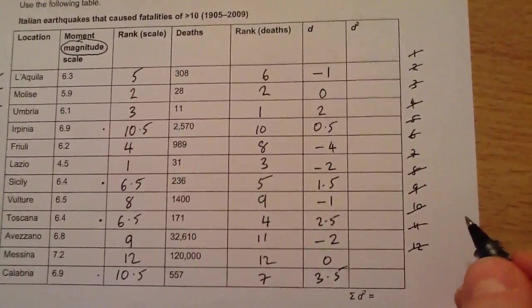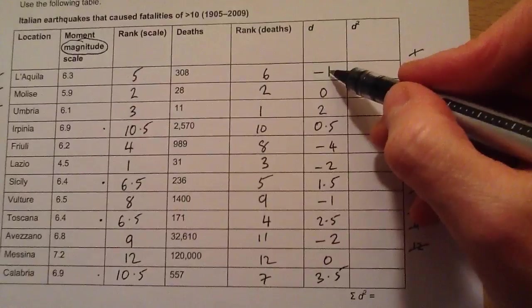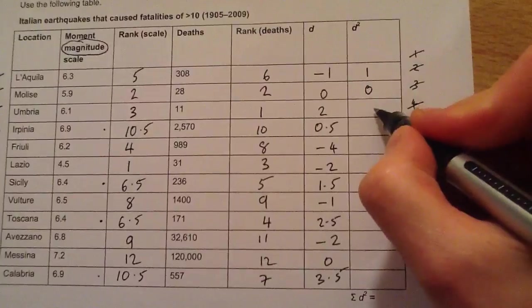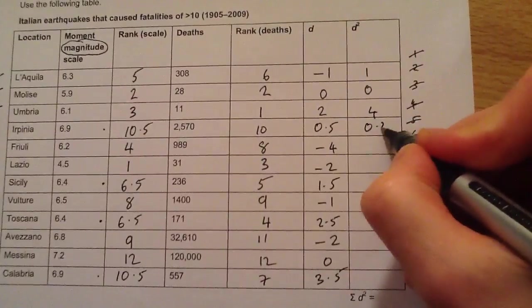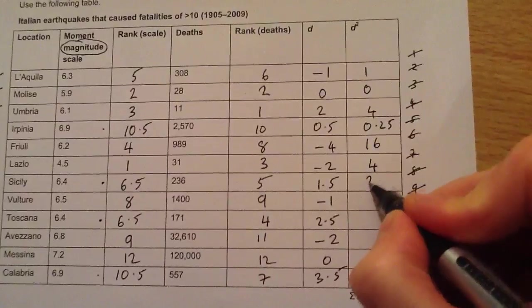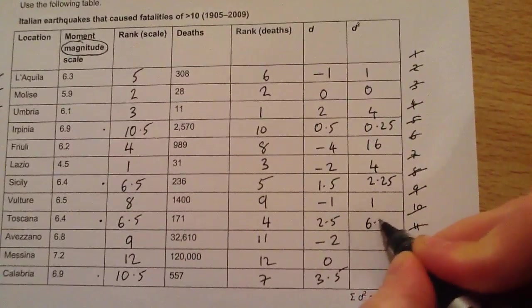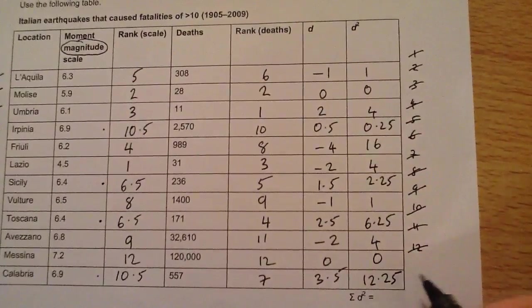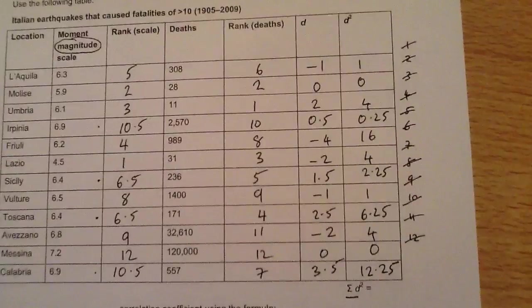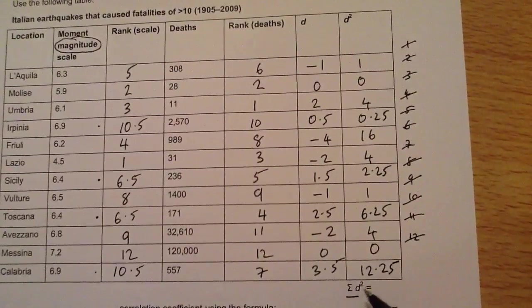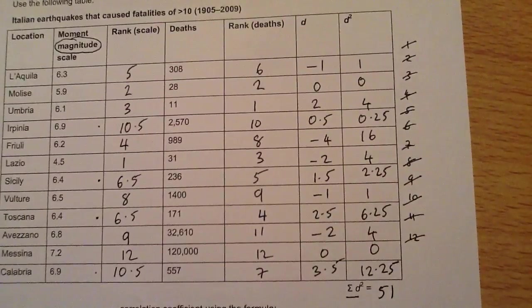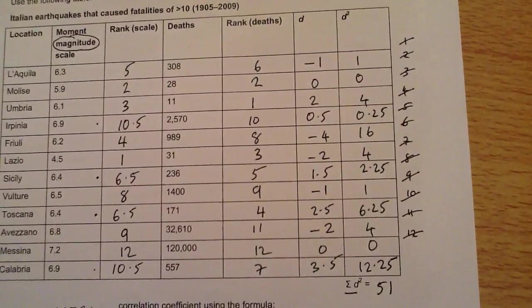The final column I need to fill in is D squared, because I've got some negative numbers and in statistics I don't want any negatives. So I square these numbers to get rid of those negatives. At the bottom I need to add up the D squared column — that's the sum of D squared — and it comes to 51.